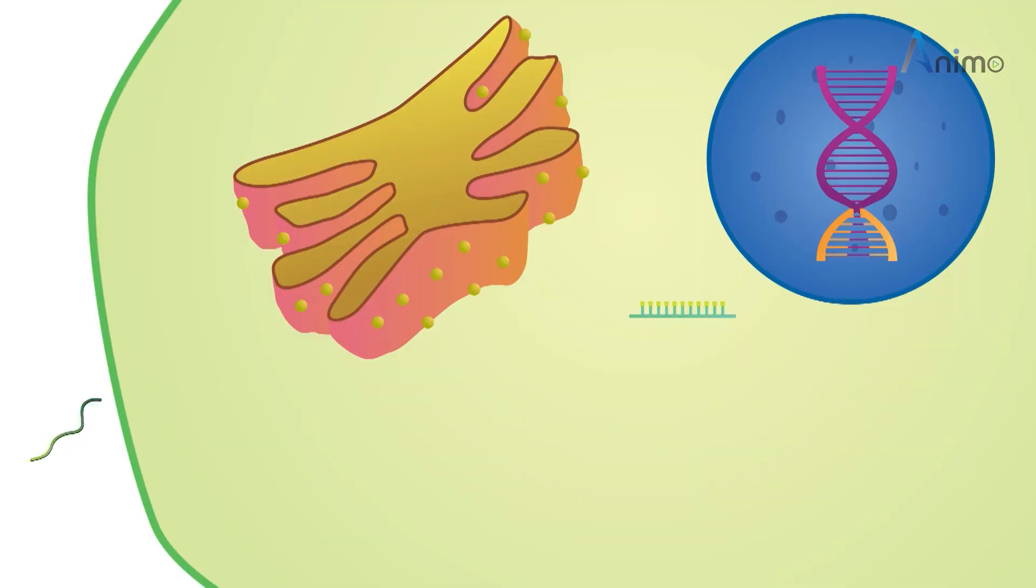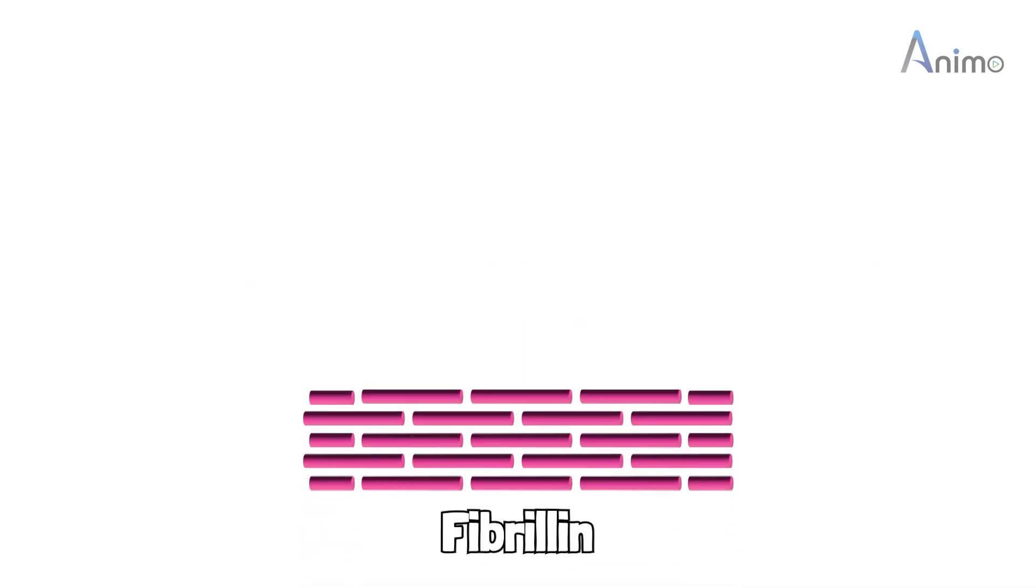It comes out of the cell. Now it requires a scaffold. So it uses fibrillin as a scaffold and by attaching on it, it forms a long chain.